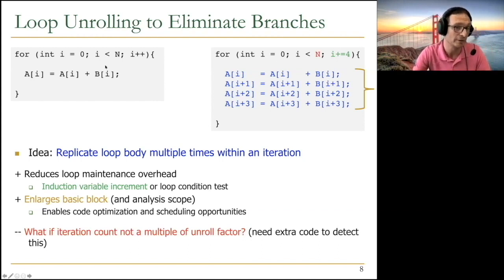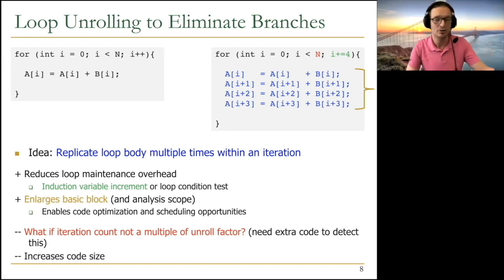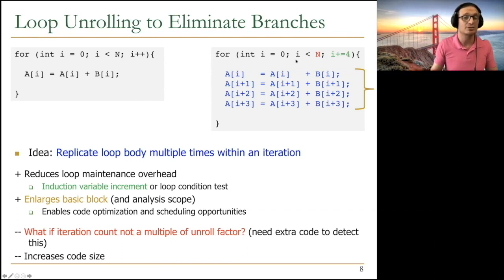And the problem happens usually when iteration count is not a multiple of unroll factor. So in this case, unroll factor is four. You're putting four iterations into a single original iteration. But if n is not a multiple of four, then you'll have problems. You need extra code to detect this, so you need to have some extra code to handle this. And that increases code size in the end. But loop unrolling is a very simple compiler-based technique to help all of the processors that we discussed today, decoupled access and execute being an important one.